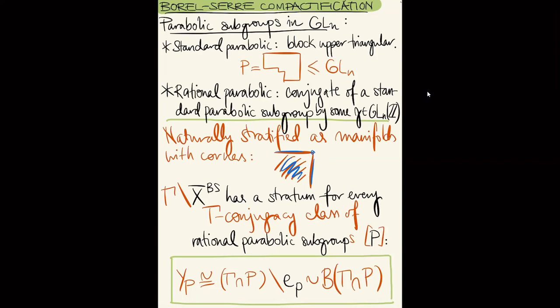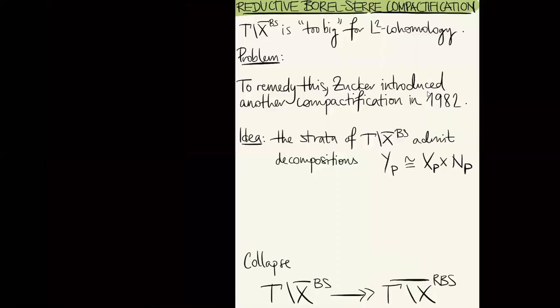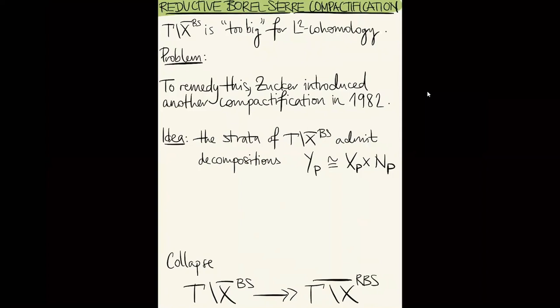The two most important properties of the Borel-Serre compactification are: one, it's a manifold with corners — a very non-singular space; two, it's a model for the classifying space of gamma. This is achieved by adding enough boundary to X/gamma to preserve the homotopy type and avoid singularities, which has very important applications. However, for some purposes this adds too much boundary. For example, if you're interested in L² cohomology, the Borel-Serre compactification is in a certain sense too big.